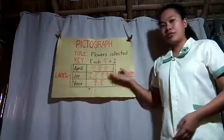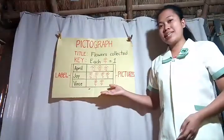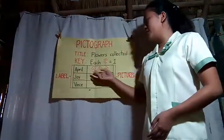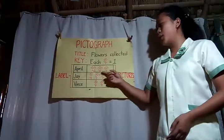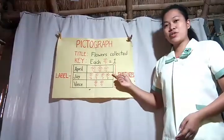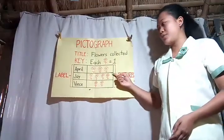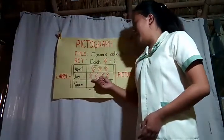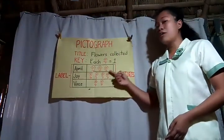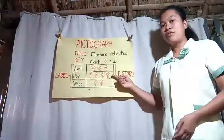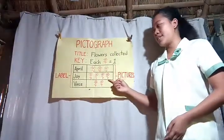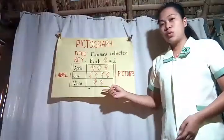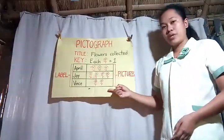So in the pictograph, we can see that April collected one, two, three — three flower pictures. Joy collected one, two, three, four — four flowers. And Vince collected one, two — two flowers.